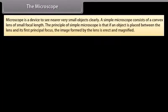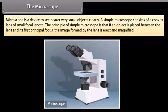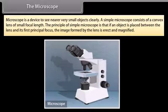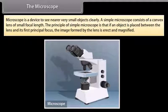The microscope. A microscope is a device used to see very small nearby objects clearly. A simple microscope consists of a convex lens of small focal length. Its principle is that if an object is placed between the lens and its first principal focus, the image formed by the lens is erect and magnified.